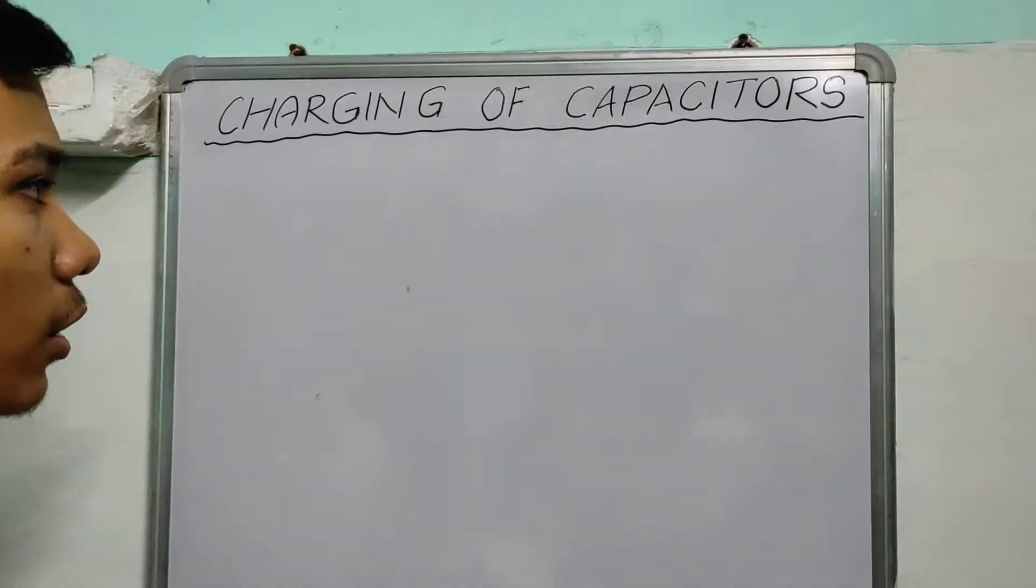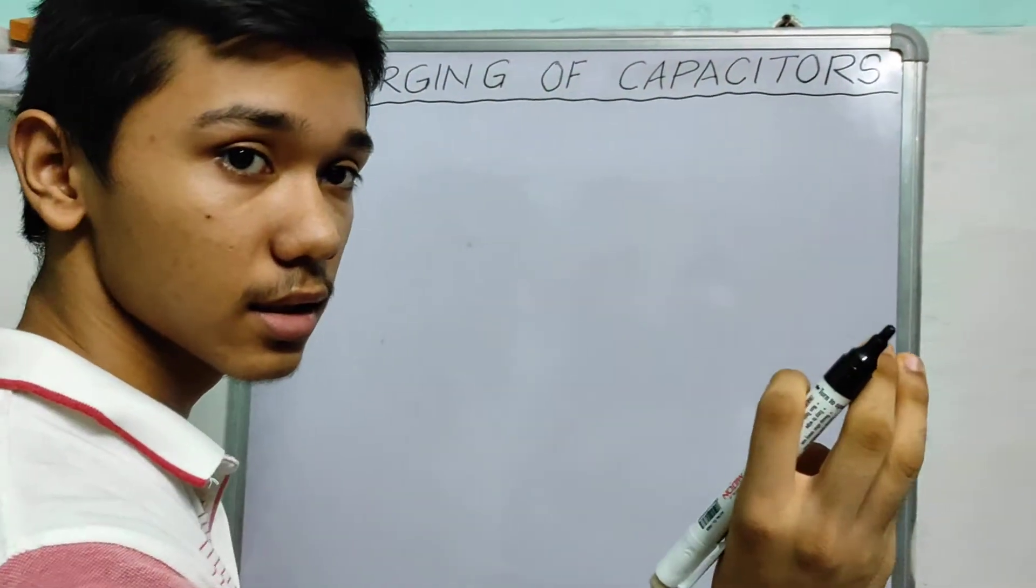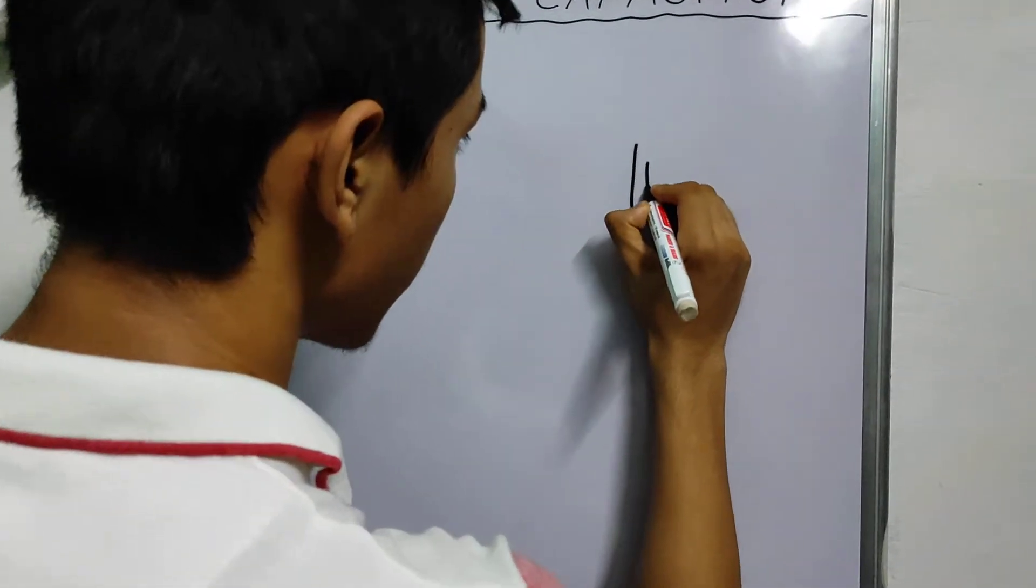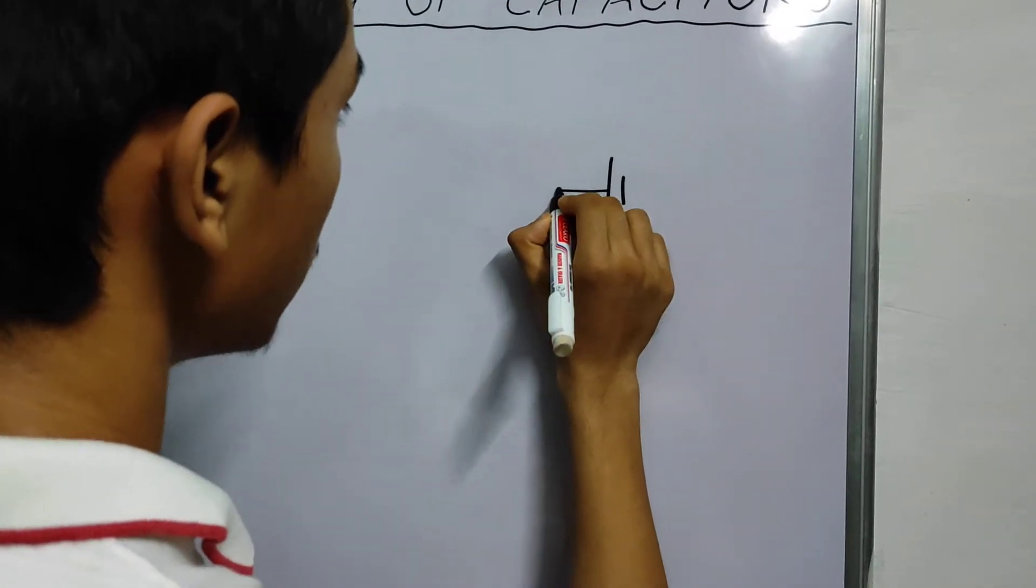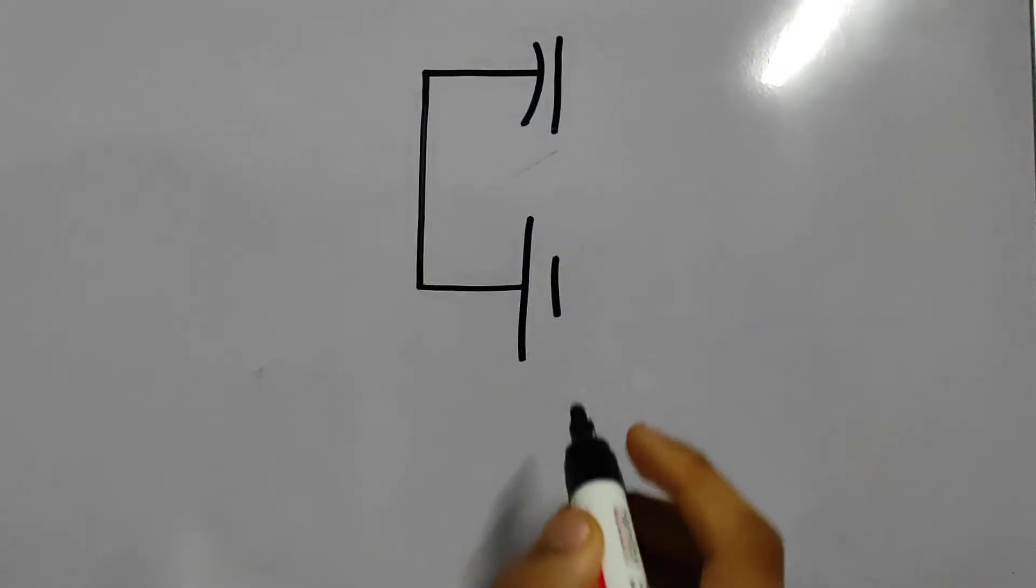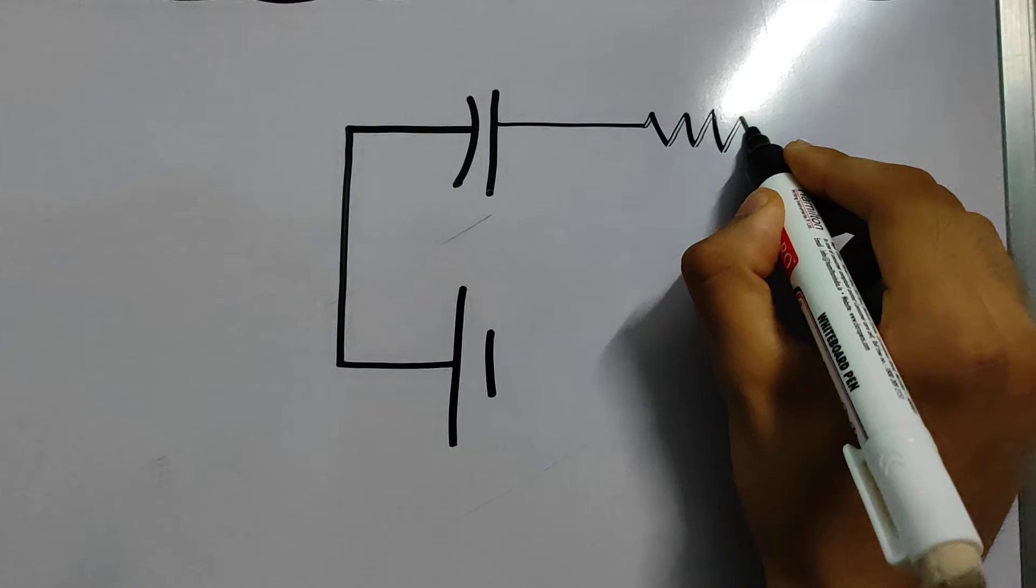So first of all let me draw a circuit which has a capacitor and a resistance with a battery. So here is a battery or a cell. This is our capacitor. It's the symbol for capacitor. And let's say we have a resistance.